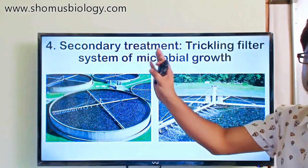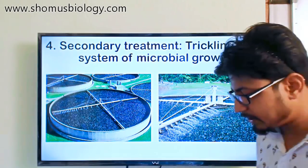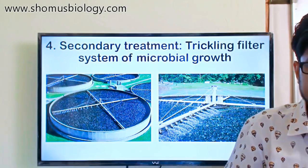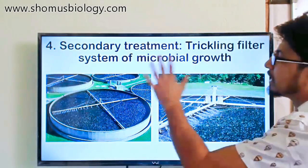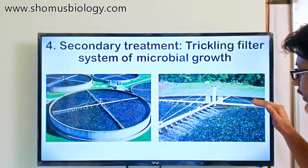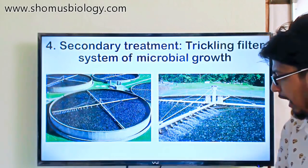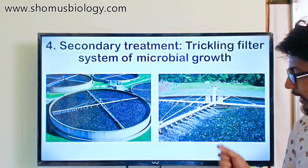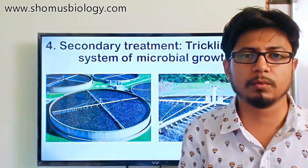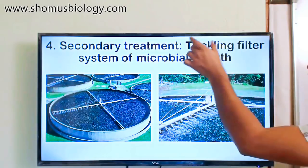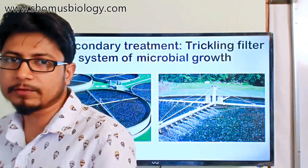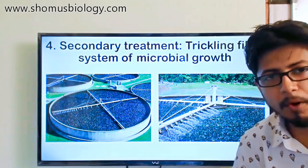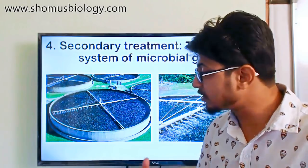This facility is called a trickling filter system for microbial growth. The trickling filter is a mechanical process utilizing the attached growth facility during secondary treatment. The gravel filter creates a large surface area and biofilms coat the surface of the bed. A pipe with a nozzle sprays or trickles wastewater on the surface, and the water travels from the top of the layer to the bottom, where a collecting duct removes the effluent.